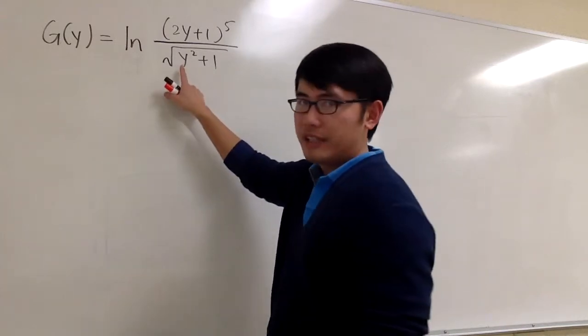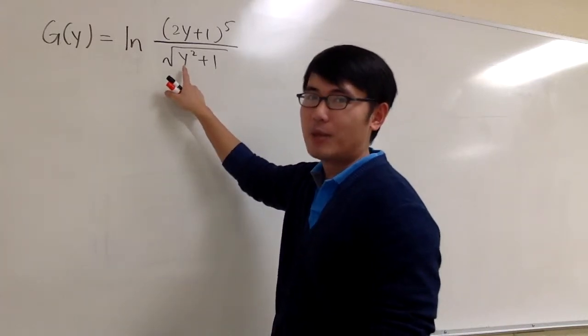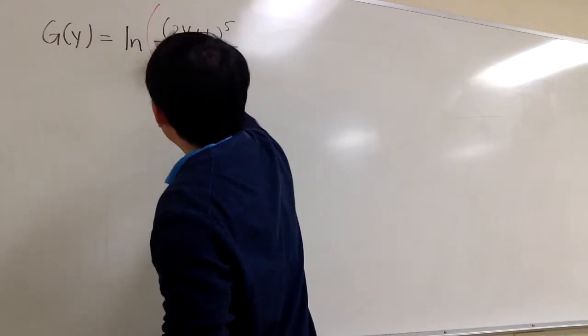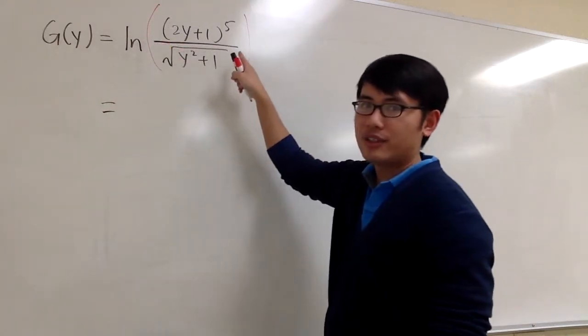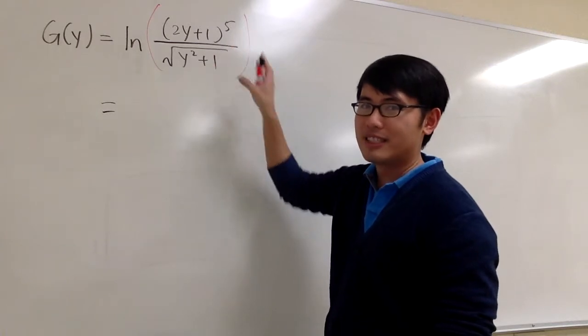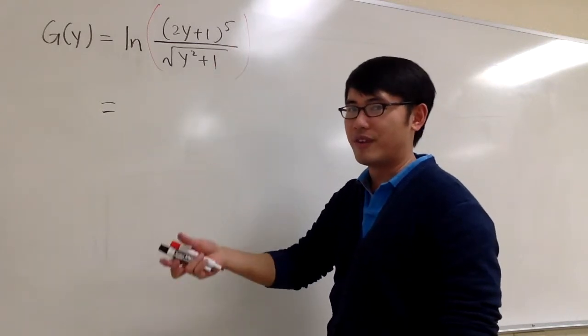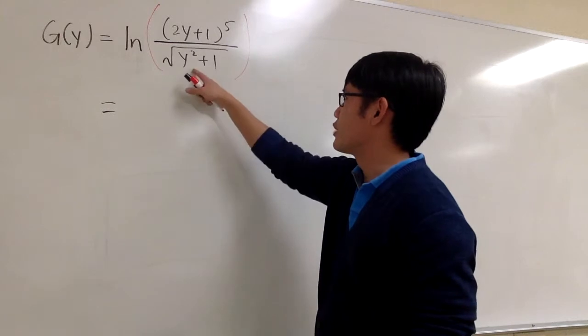Before we go, we should take a look at this expression and see how much we can simplify. The entire thing is inside of the natural log. We have a fraction, so we can break this apart as a subtraction of the natural log of the numerator minus the natural log of the denominator.